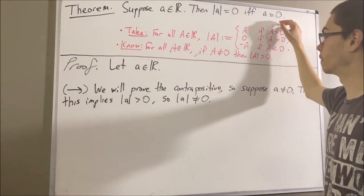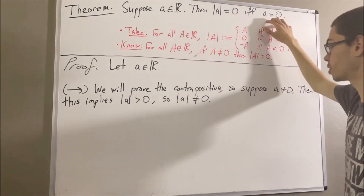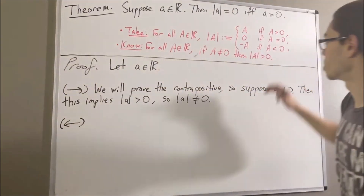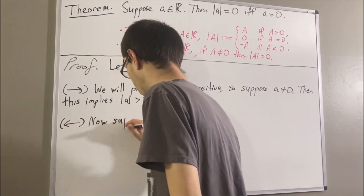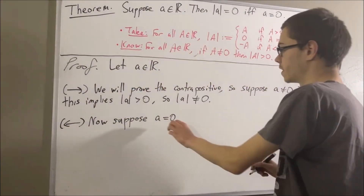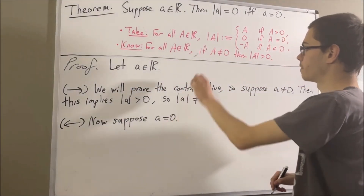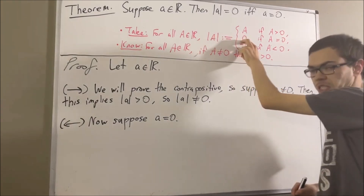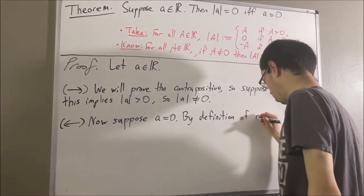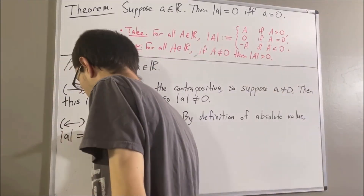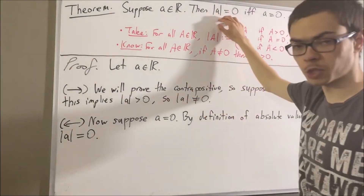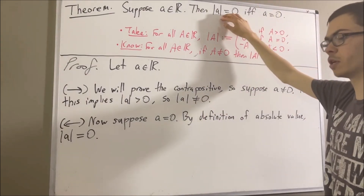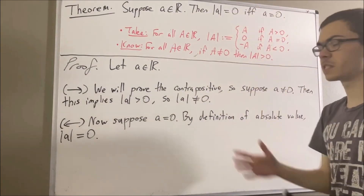Now we're going to prove the converse: if a equals zero, then the absolute value of a equals zero. Suppose a is equal to zero. Well, since a is equal to zero, we know by the definition of absolute value that the absolute value of a is equal to zero. So we have proven the converse, completing the proof of that direction.